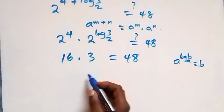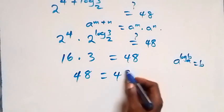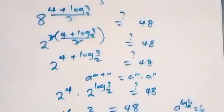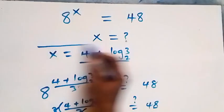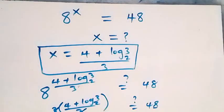So we have 16 times 3, which equals 48. The left-hand side equals the right-hand side, confirming that x equals (4 plus log 3 base 2) over 3 satisfies the given problem. Thank you for watching — don't forget to subscribe for more videos, turn on the notification bell, share this video, give a thumbs up, and see you next class!